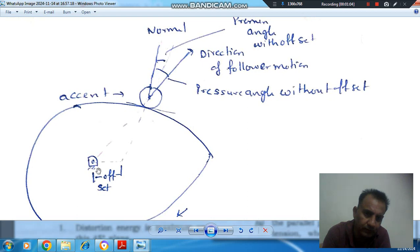When offset is there, the motion of the follower will be in this direction, and the pressure angle will be reduced. The pressure angle is reduced from this to this.